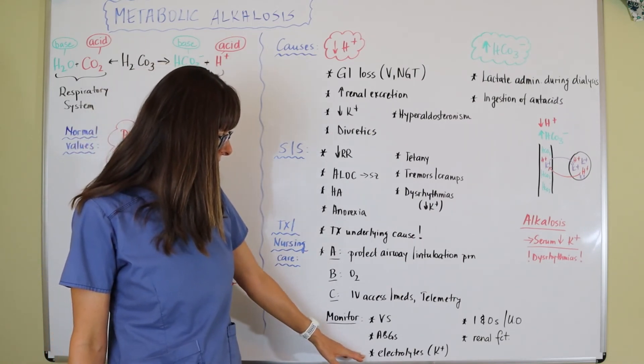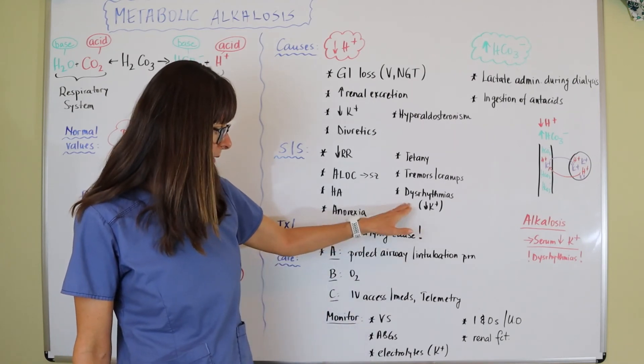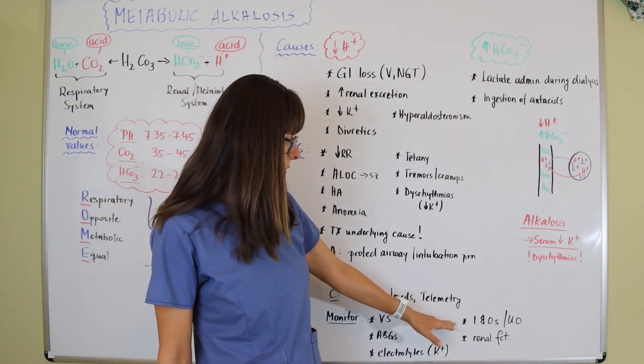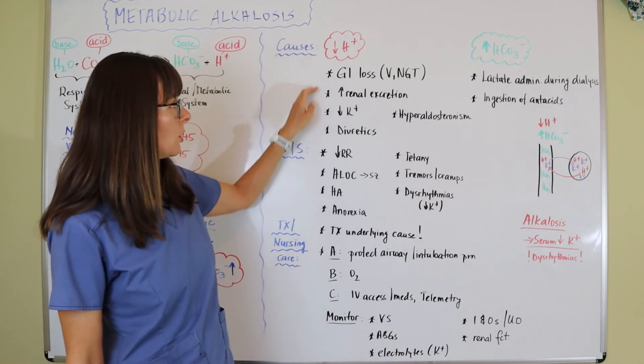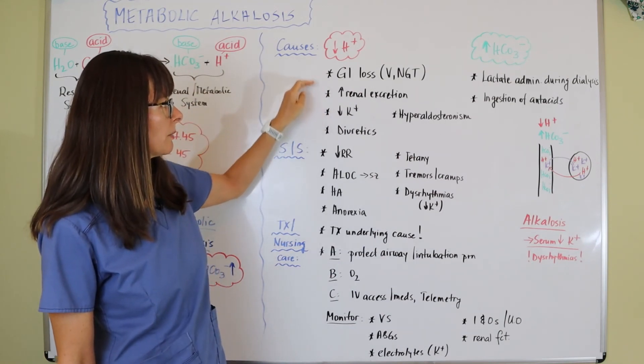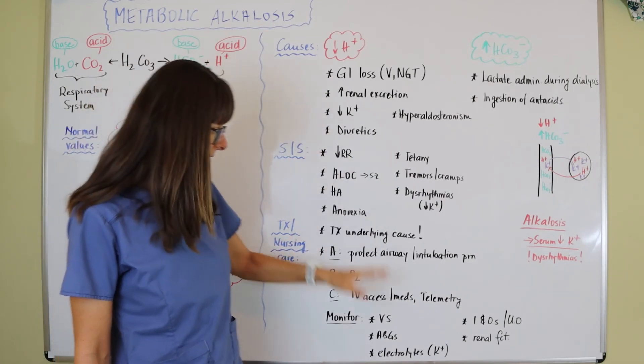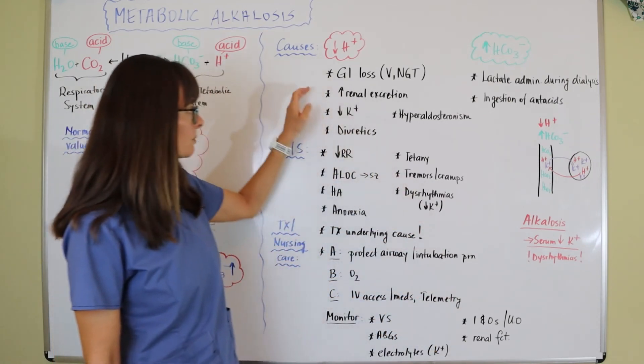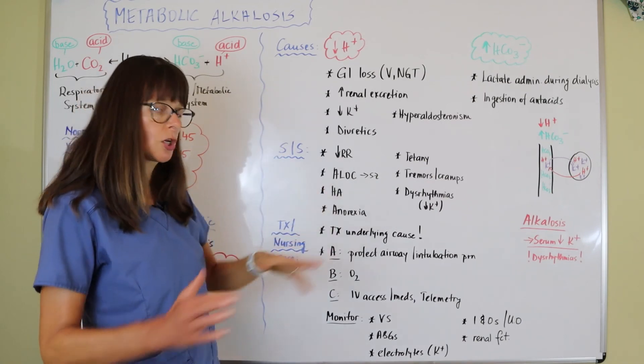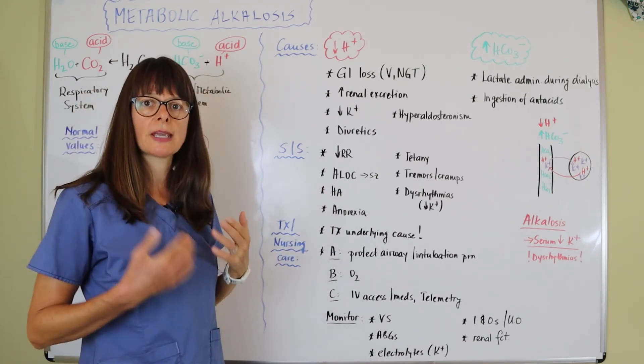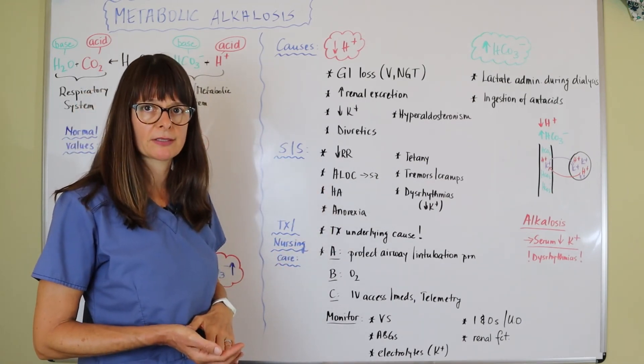We want to monitor their electrolytes, specifically potassium, their ins and outs and urine output, because in all of these cases we are talking about kidney and potential for dehydration. We want to keep an eye on that as well as their renal function, because if there's something going on with the kidney as an underlying cause, we need to find out what it was and what we can do to balance that.